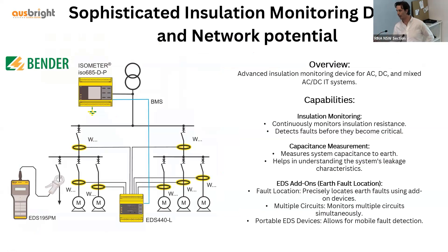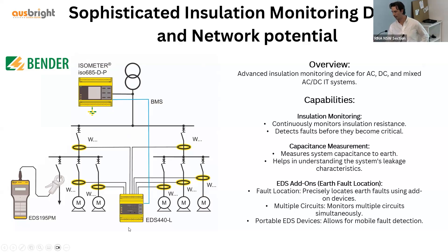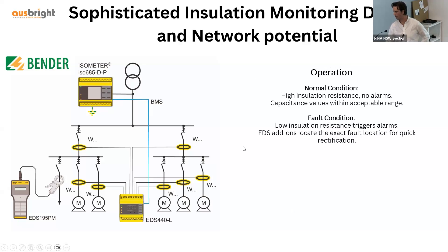Even more sophisticated insulation monitoring devices are now available where current transformers can be placed in your circuits, giving more specific fault-finding information about where an Earth fault has occurred. You can see the Earth monitoring device sits at the top, always after the transformer. Further down the circuits you can introduce what they call an EDS module, which connects to current transformers. These transformers pick up the capacitance value of that circuit, and if it is deteriorating, it will report back to the master device.